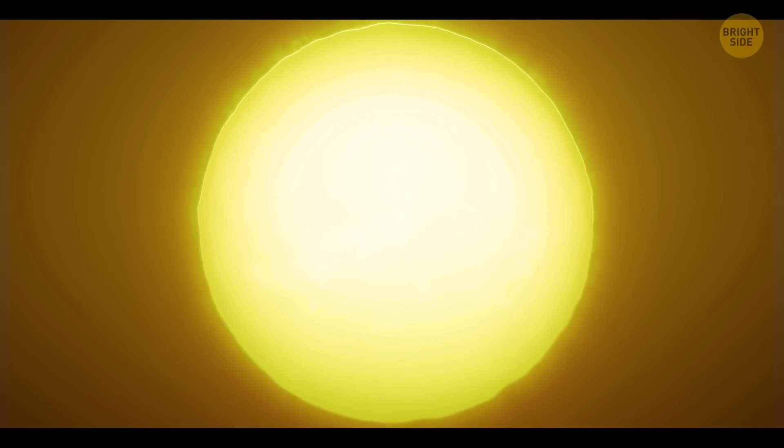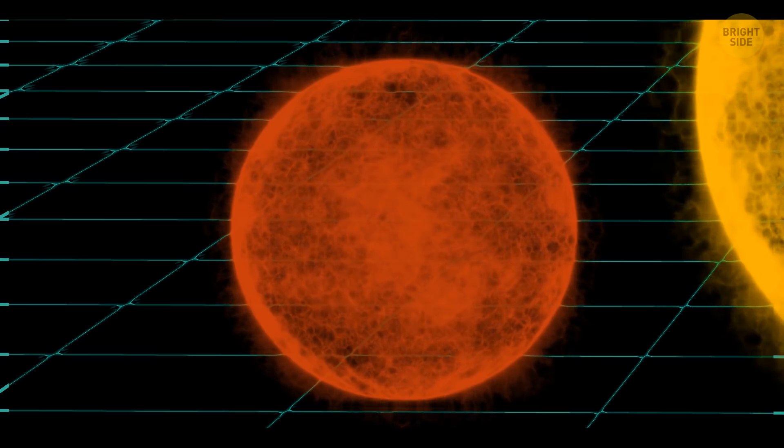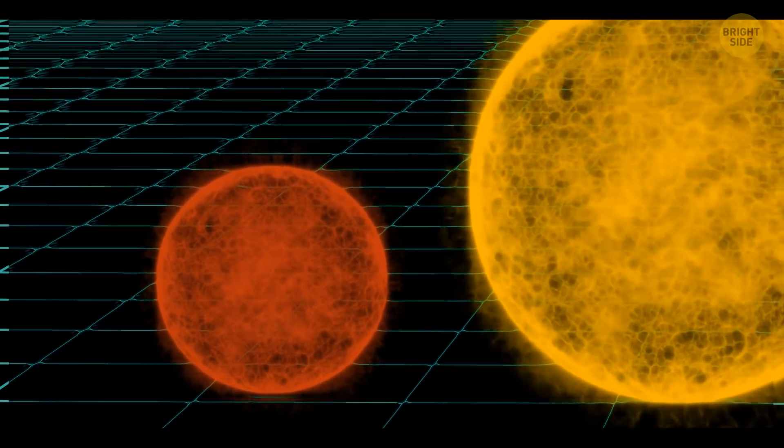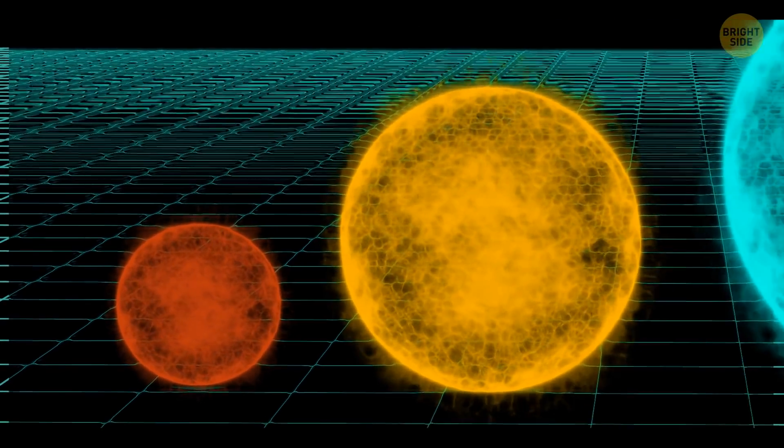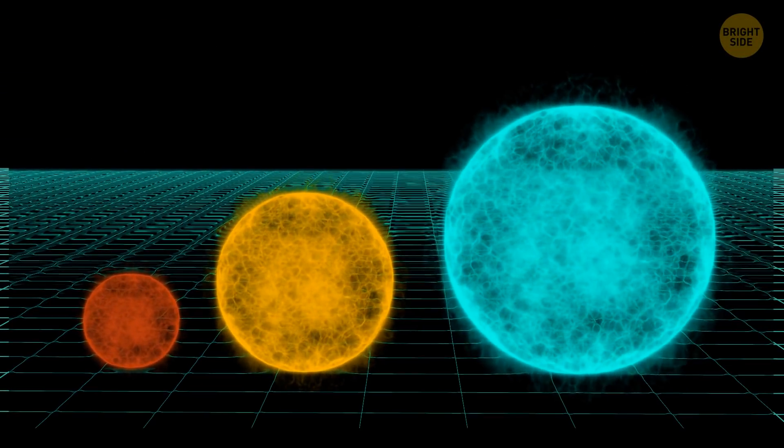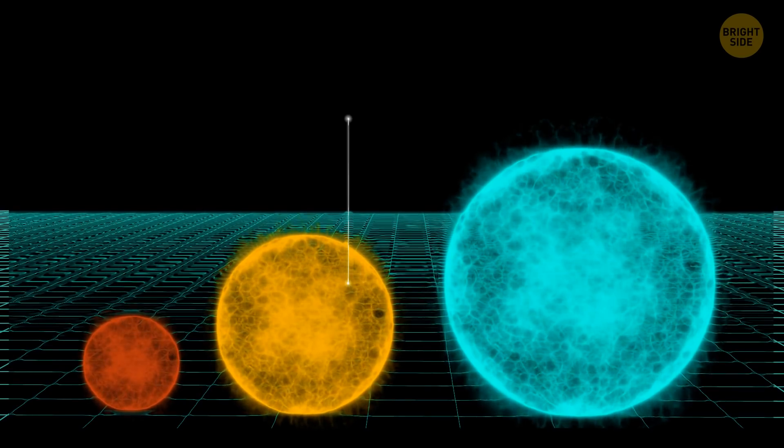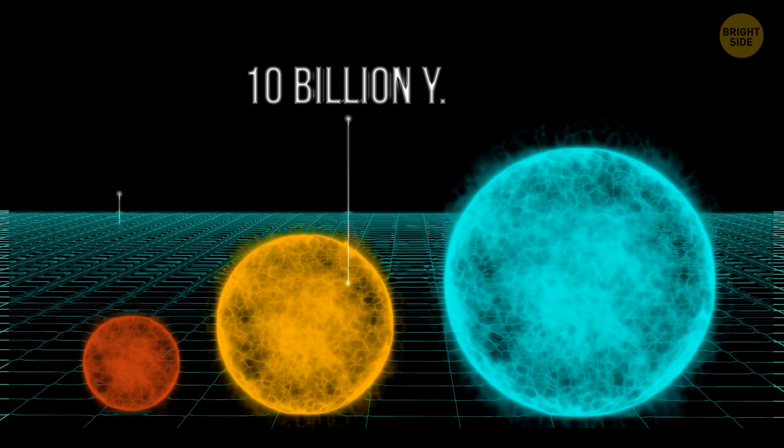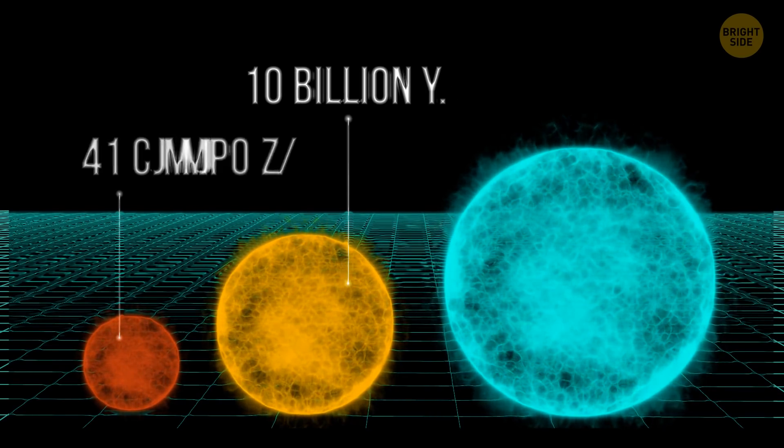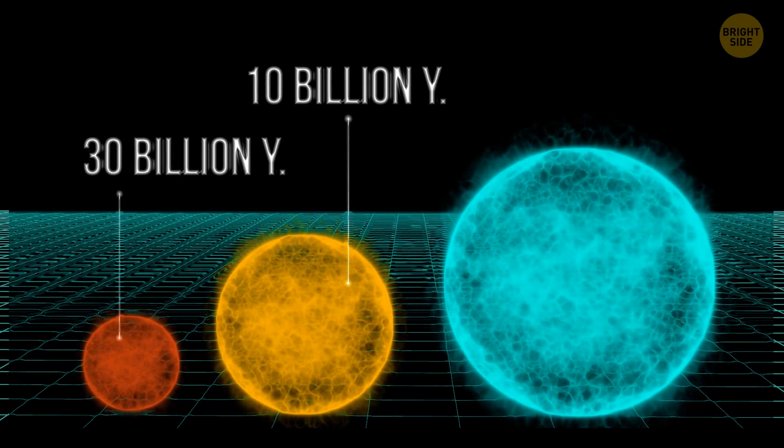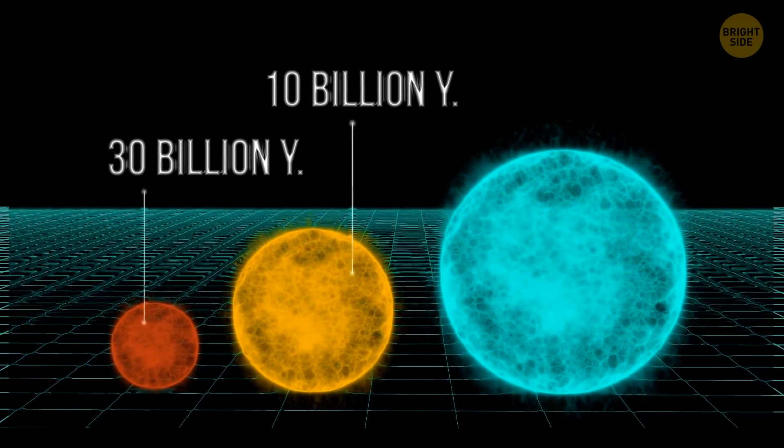The host star also plays a very important role. It should be smaller than the sun. The bigger the star, the more of its fuel it burns. This means that the lifespan of such stars is much shorter. For example, the lifespan of the sun is about 10 billion years. But a red dwarf can live up to 30 billion years. More time, more opportunity for the birth of life and evolution.